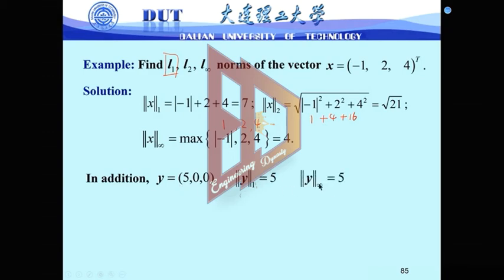And for infinity norm, the best score, of course, is just 5. Also, we can consider the 2 norm. It is the square root of 5 square plus 0 square plus 0 square, then it's just 5. Now you see? 5, 5, 5.